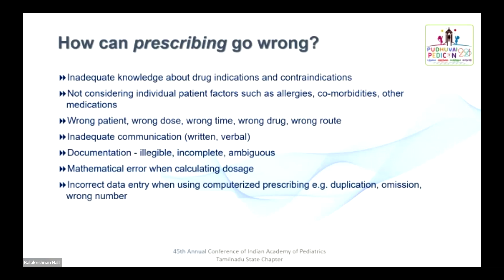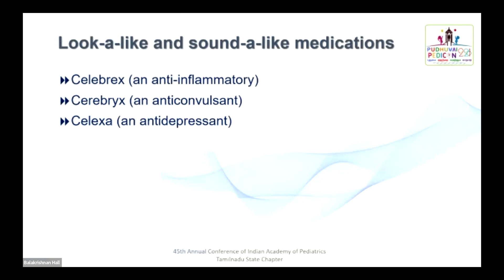For example, drugs called Celebrex, Celexa, and Cerebrex are look-alike and sound-alike medications with different mechanisms of action — this is an example of error through similar brand names. The ideal prescription should contain the generic name rather than the brand name to avoid such errors.